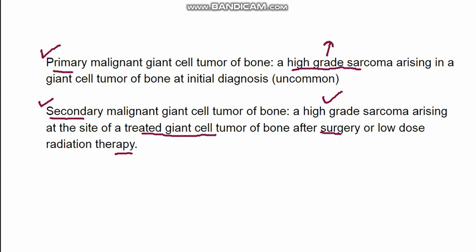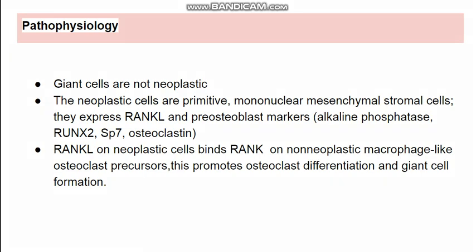Regarding pathophysiology, the mononuclear cells are the neoplastic component; the giant cells are not neoplastic. The neoplastic mononuclear cells express RANK ligand, as well as other markers like alkaline phosphatase and osteocalcin, which are important for diagnosis. The RANK ligand binds to RANK on osteoclast precursor cells, leading to the formation of the giant cells. This is the main reason for giant cell formation, and RANK ligand inhibitors are therefore a treatment target.